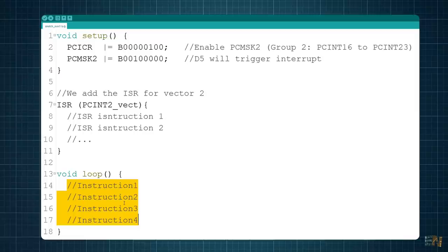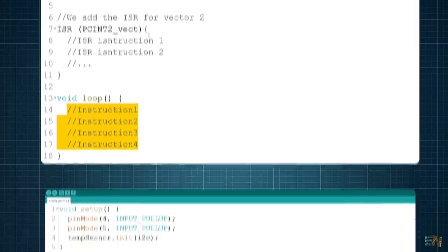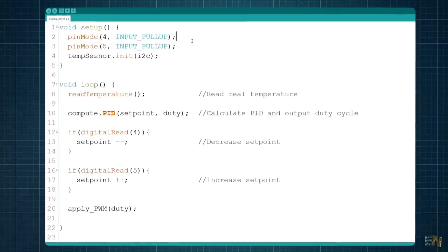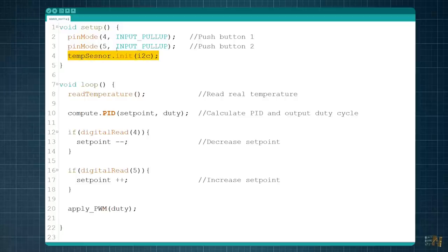To sum everything up and better understand, let's see a full example. Let's say that we have this code. I have two push buttons connected on pins D4 and D5 of the Arduino. I also have a temperature sensor connected to the I2C port and in the code, we use this function to read the temperature.